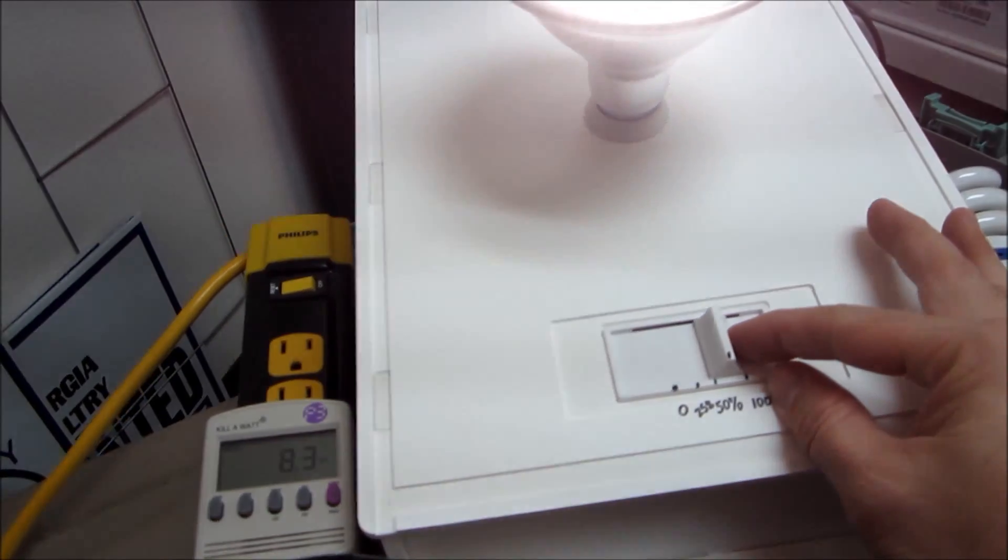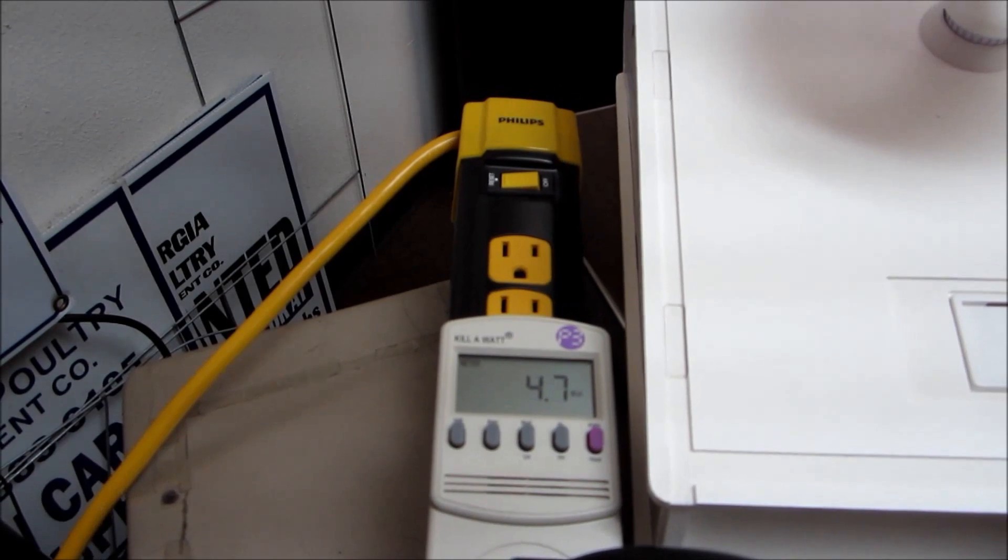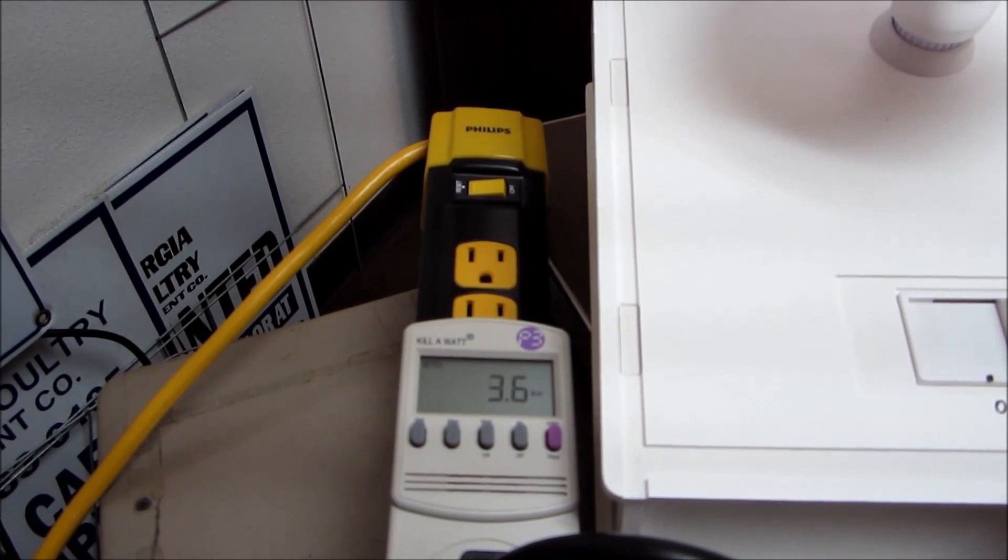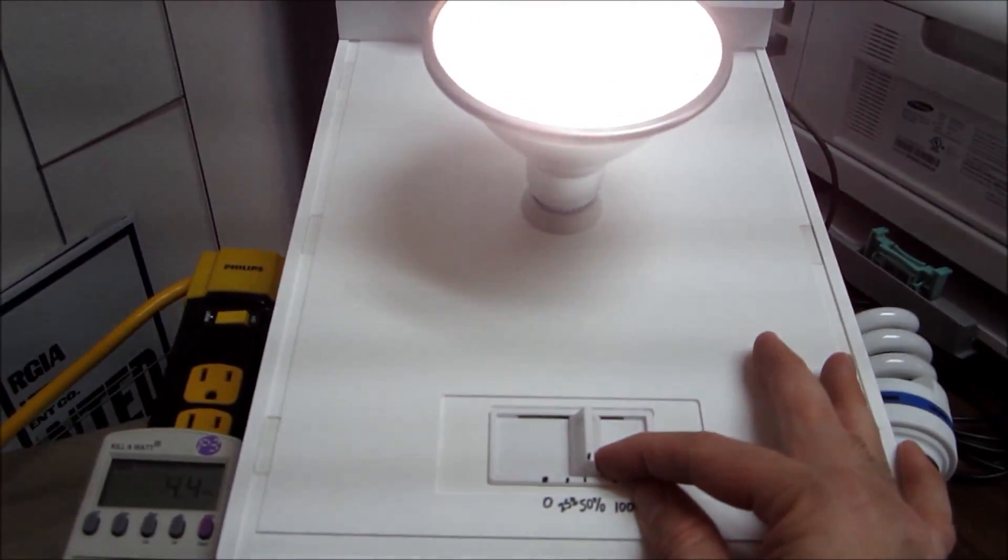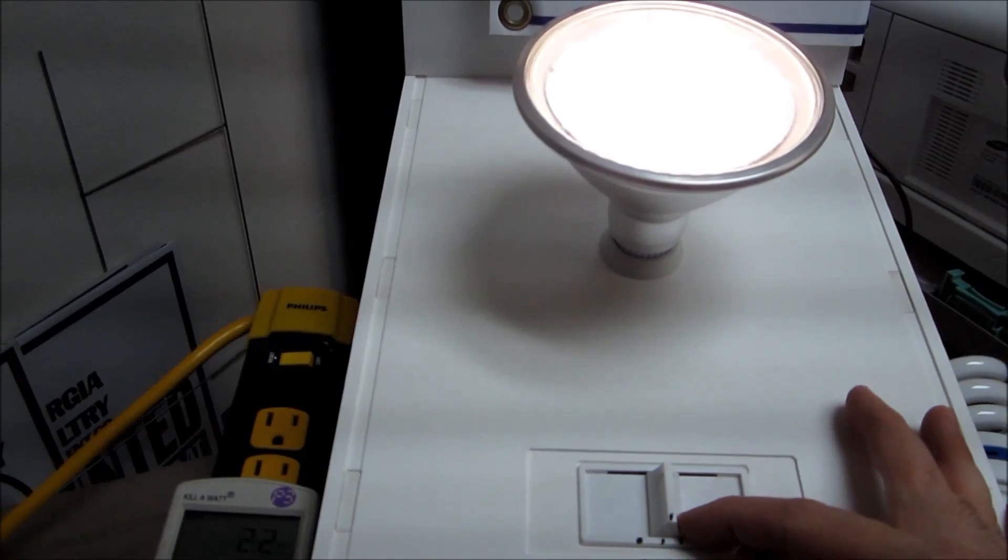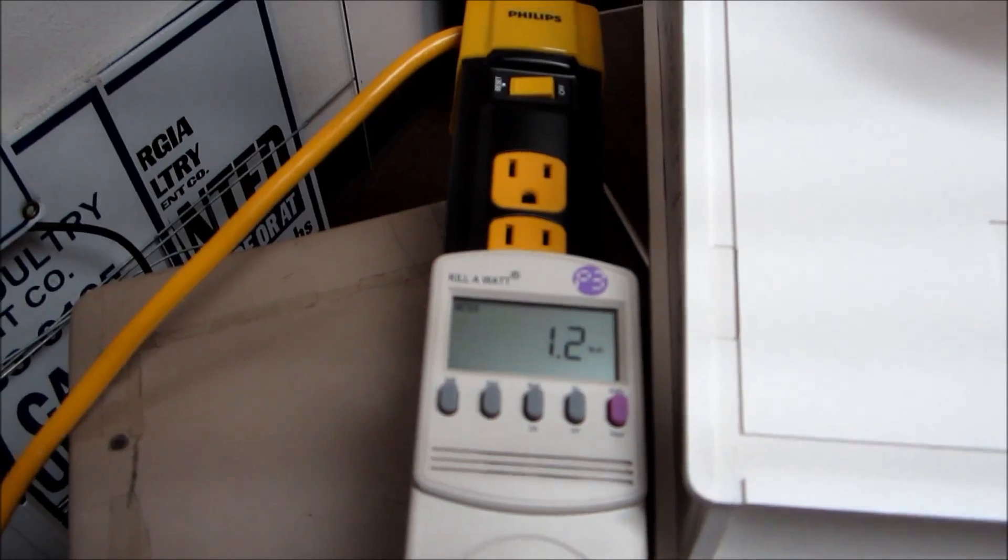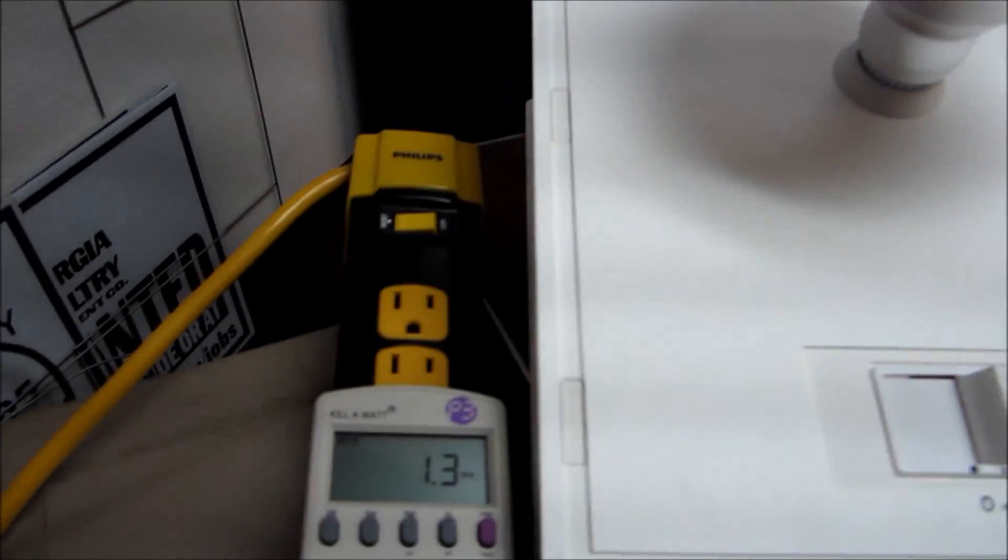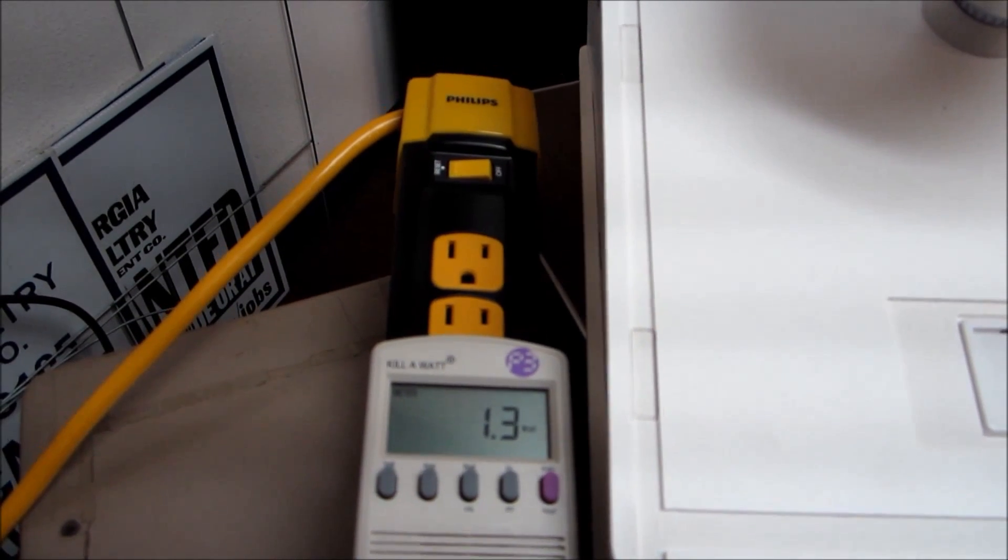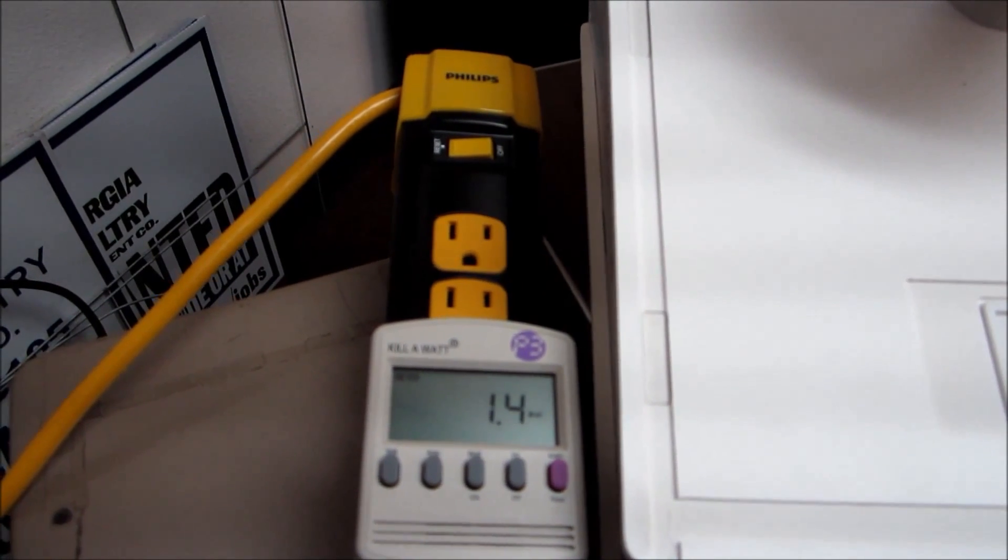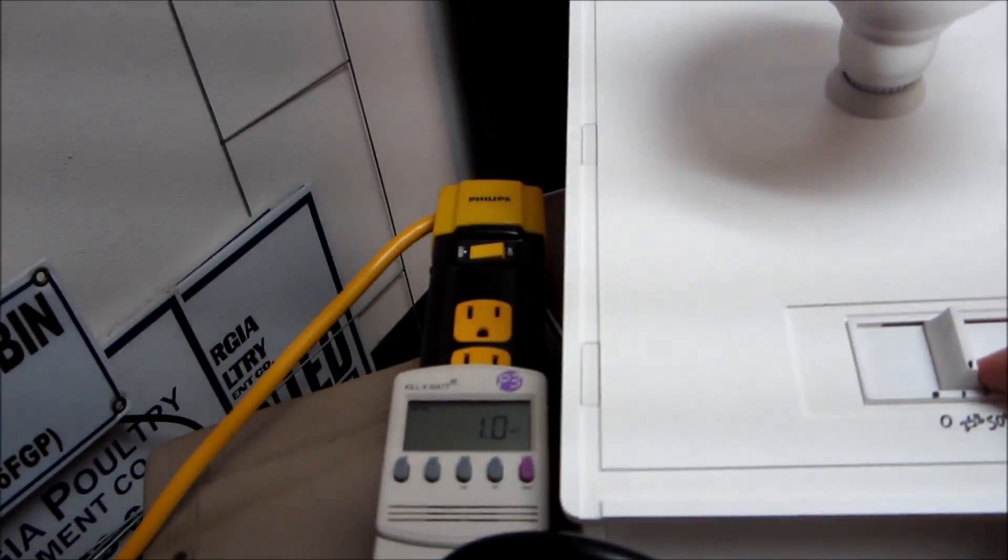And then now we are going to dim it down to 50% and at 50% we are basically using 4 to 5 watts. It just depends. The LEDs do a little more fluctuating and I am not sure why but I am sure it has something to do with the technology. And then at 25% which is roughly probably what you would be at in the broiler house, you are using basically 1 watt, 1.5 at tops and then sometimes less than 1 watt at the 25% rating. And then of course off.